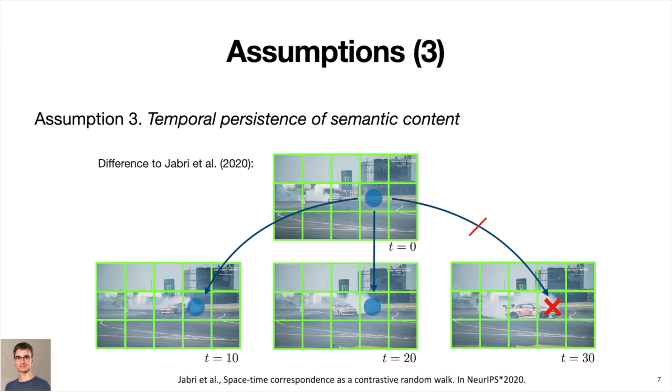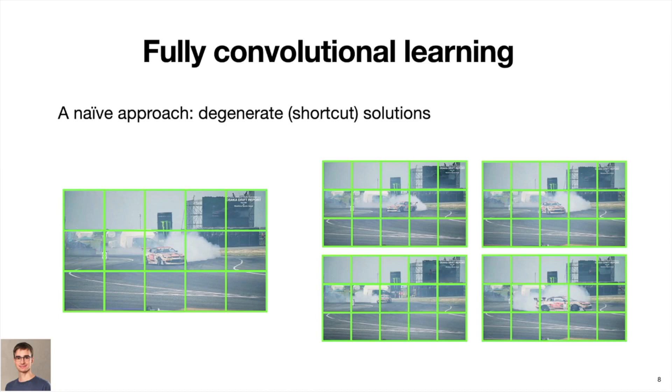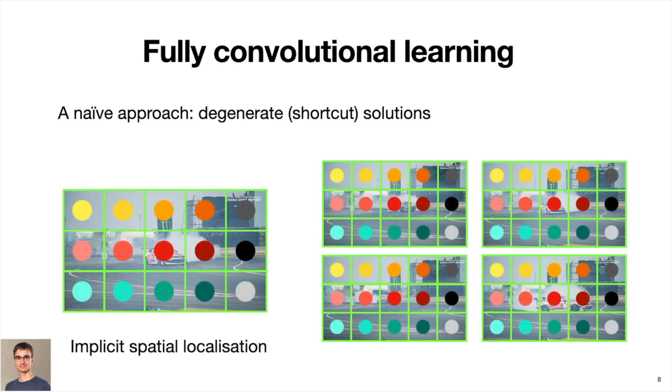If we now attempt to implement these assumptions and learn a feature representation in a fully convolutional fashion, this will result in a degenerate or shortcut solution. In our preliminary experiments, we observed that the network will simply ignore the input and learn, as we hypothesize, something akin to positional encoding. A similar observation was made in previous works and is related to the fact that commonly used implementations of convolutional networks are not truly translation invariant, for instance, due to padding.